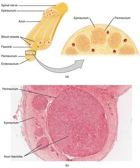Each axon within the nerve is an extension of an individual neuron, along with other supportive cells such as Schwann cells that coat the axons in myelin. Within a nerve, each axon is surrounded by a layer of connective tissue called the endoneurium.